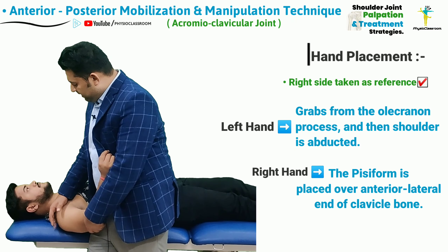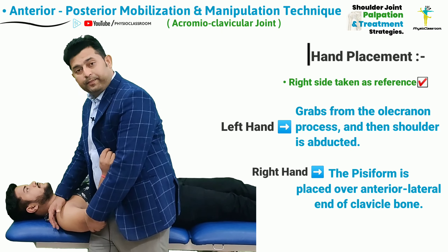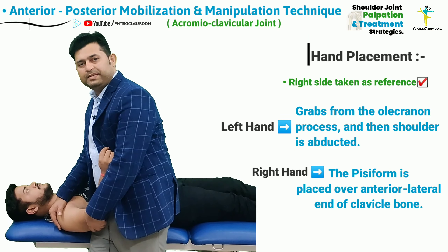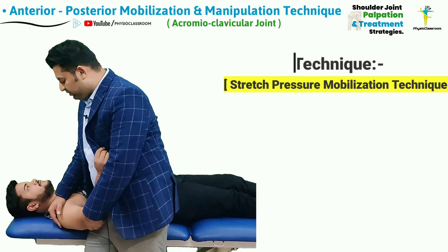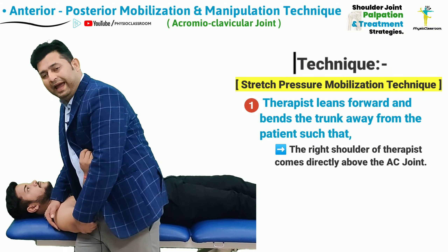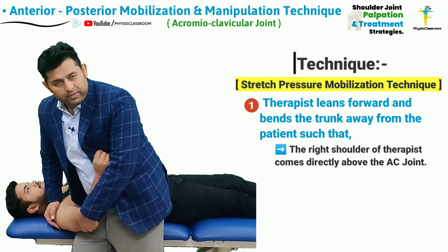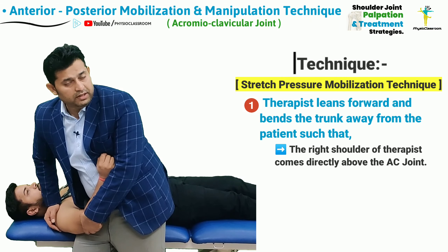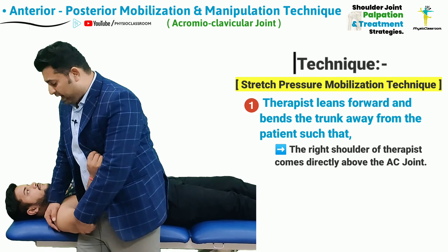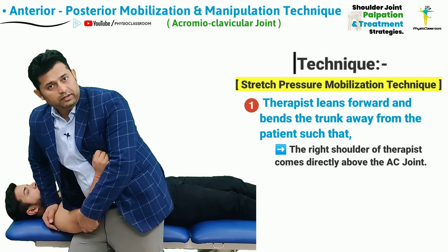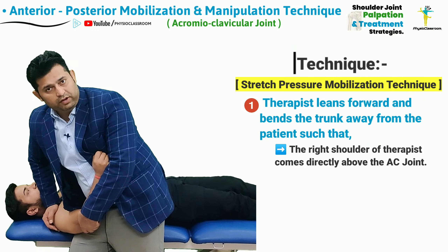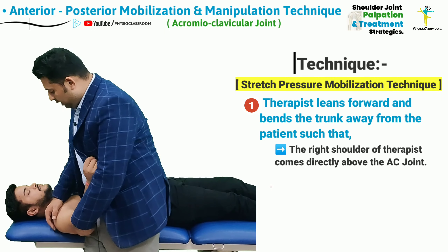While maintaining these two contact points, the therapist next bends the trunk forward and leans over the patient so that the right shoulder comes directly above the acromioclavicular joint.